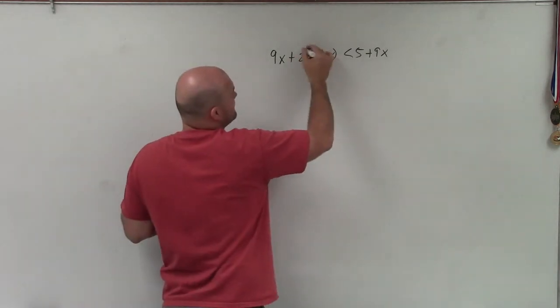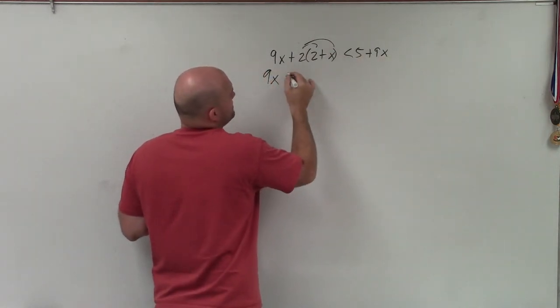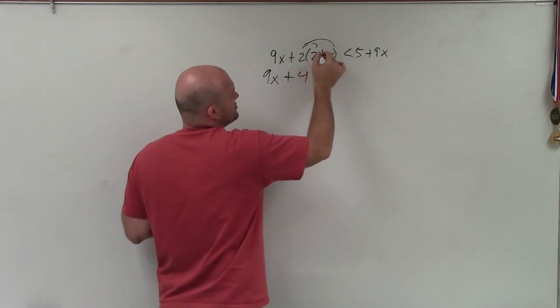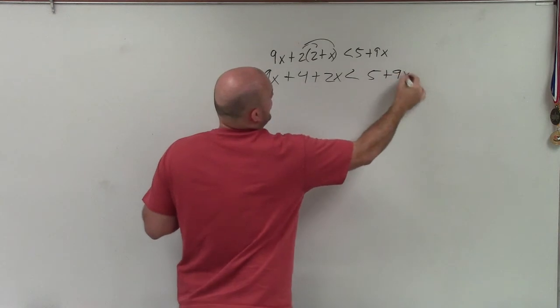So to simplify the left side, I need to apply distributive property. There's really nothing I can do on the right side. So I have 9x plus 4. 2 times 2 is 4. 2 times x is 2x. It is less than 5 plus 9x.